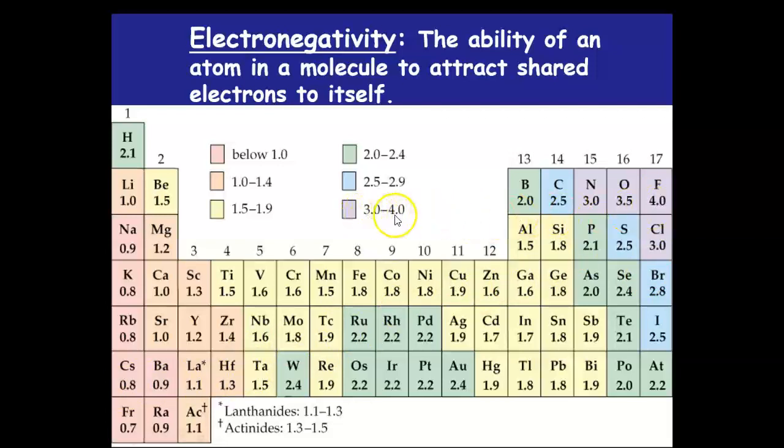3.2 is here between 3 and 4. Anything between 3 and 4 is essentially 90% plus ionic. There's very little sharing going on. The cesium has given its electron to the fluorine making a fluoride ion.